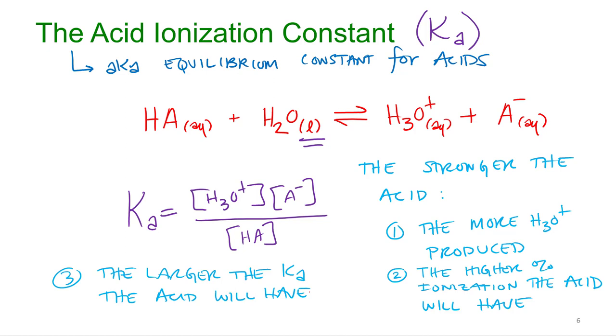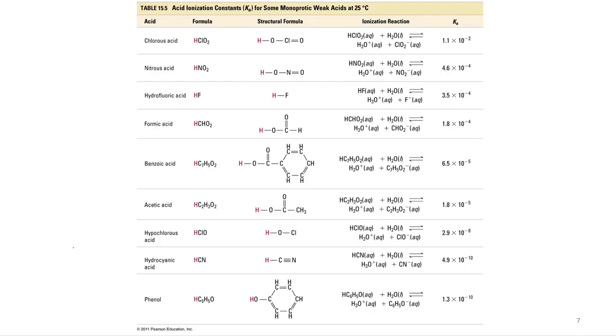So as you're reading this, you're like okay, the stronger the acid, the more H3O+, got it. The higher the percentage ionization, got it. And that's it. Nope, you got to go over here. Three. The bigger the Ka, the stronger the acid is. That's what you could say. The bigger the Ka, the stronger the acid.